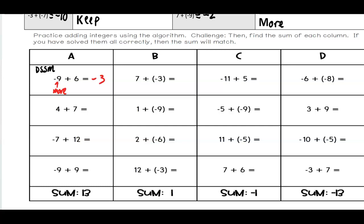Seven plus negative three. That's again a DSSM, different signs, subtract more. So seven minus three. I have more positives. So seven minus three is four. So I get to keep my answer as four.